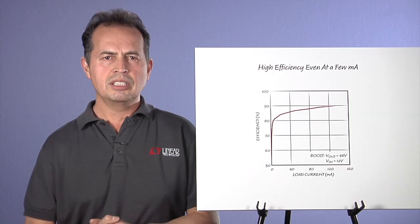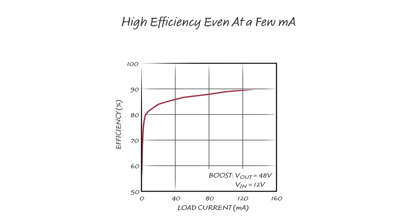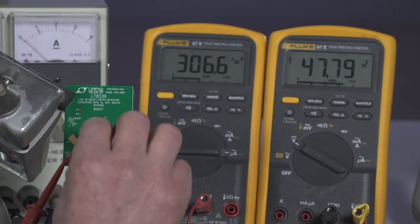This is where the LT8330 shines. This figure shows the efficiency for the simple step-up converter previously shown. It peaks at about 90% and stays above 70% down to just a few milliamps of load current. When the converter is turned off, the input current is only about 13 microamps drawn by the feedback resistors.